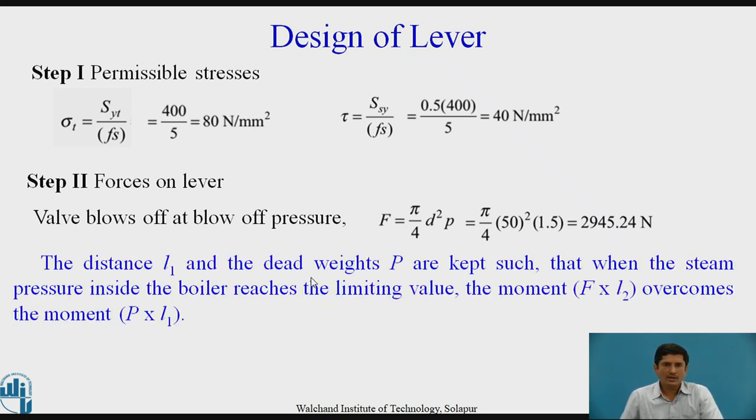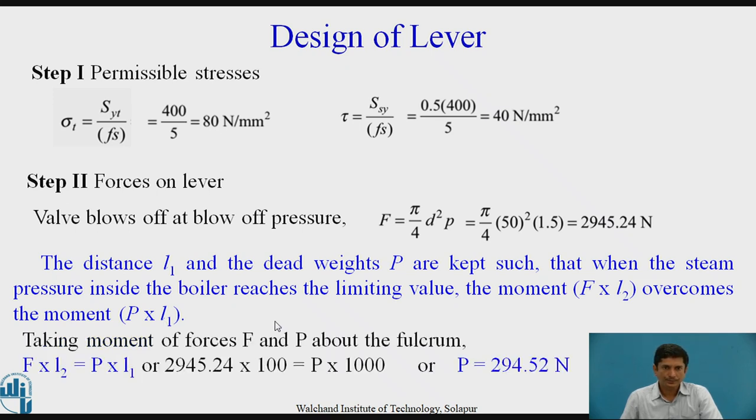The distance L1 and the dead weights P are kept such that, when the steam pressure inside the boiler reaches the limiting value, the moment F into L2 overcomes the moment P into L1. Taking moment of forces P and F about the fulcrum, F into L2 equals P into L1.